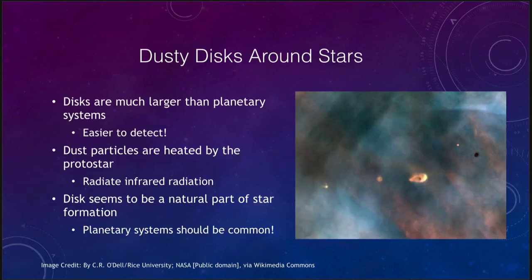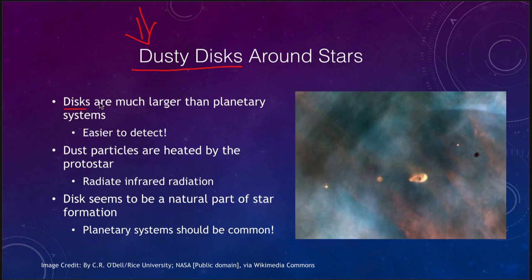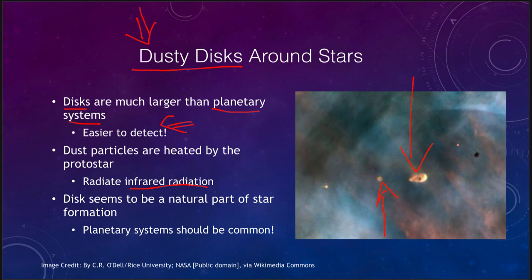It wasn't until the last few decades that we were able to actually detect planets around other stars. However, we did have evidence in the form of dusty disks of material, so we could see what we thought were perhaps planetary systems forming. These disks are much larger than the planetary systems themselves, making them easier to detect. The dust particles are going to be heated up by the protostar at the center and radiate infrared radiation, so when we look, we see these little dusty areas which are likely the beginnings of planetary systems that are forming.